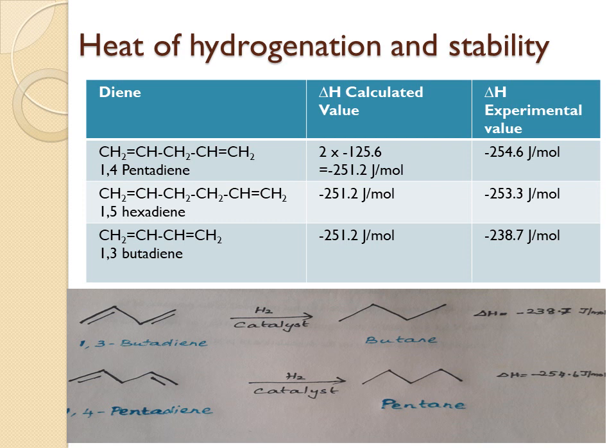In the reaction, 1,3-butadiene on hydrogenation gives butane, while 1,4-pentadiene on hydrogenation gives pentane. The carbon at the third position in 1,4-pentadiene has sp3 hybridized orbitals with no delocalization, whereas in 1,3-butadiene there is delocalization resulting in extra stability. So conjugated dienes are more stable than isolated dienes.